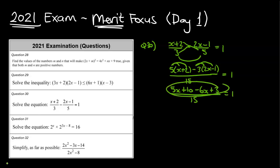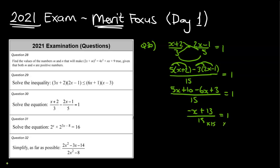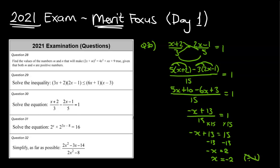Simplifying the numerator: 5x − 6x gives −x, and 10 + 3 gives 13. So (−x + 13)/15 = 1. Multiplying both sides by 15: −x + 13 = 15. Subtracting 13 from both sides: −x = 2. Moving the negative sign over gives x = −2.